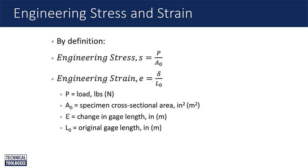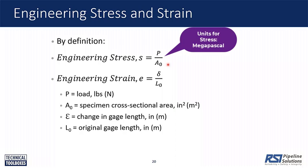If you have three-axial loading, we can define stress and strain in similar ways. Stress and strain under three-axial loading is going to be a matrix or a tensor. The idea is the same: we divide load by area — that's stress. We divide the amount of deformation by the original length — that becomes strain. The unit for stress is the same as pressure, like psi or megapascal.